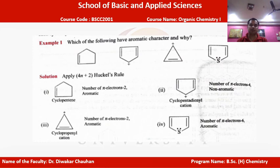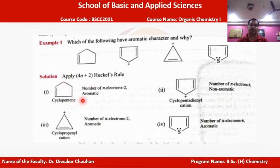Cycloheptene has only one pi bond giving two pi electrons. Applying Hückel's 4n+2 rule gives n=0, an integer value. Since it is cyclic and follows Hückel's rule, cycloheptene is aromatic in nature. Similarly, cyclopropenyl cation also has one pi bond with two pi electrons and, as discussed, follows Hückel's rule and is aromatic.